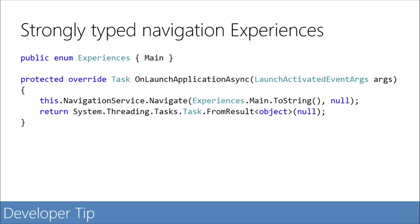Here's a developer tip: this.NavigationService.Navigate takes a string, but we don't like literal strings, so we created an enumeration. It's an enumeration of what the experiences are. In Solarizer, we've given it a pretty high scope. That allows you to have everything strongly typed — you can make changes without worrying that there's some literal string somewhere you can't find, like a misspelled 'main.' We use an enumeration that is the list of experiences.